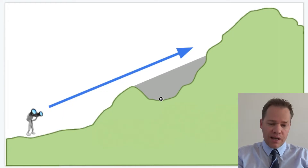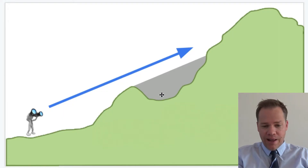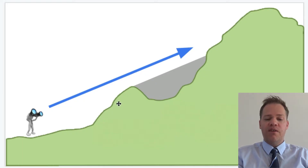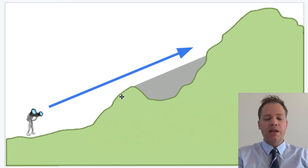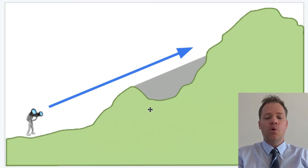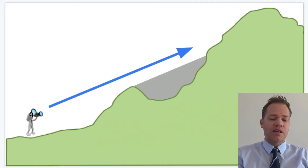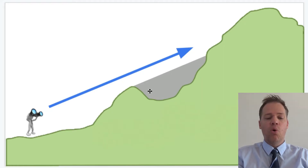But if I go and stand right there, then I won't be able to see my friend because we have a blocking feature. So this area here is called a blocking feature, and everything that this person down here can't see — this gray area — is called dead ground.